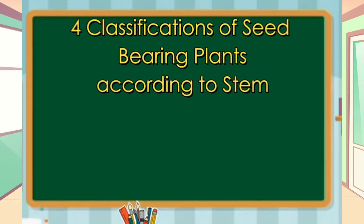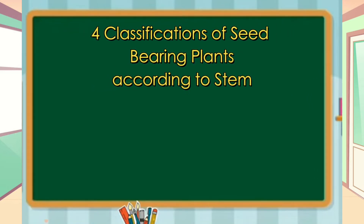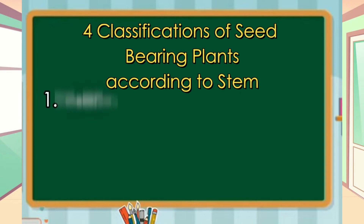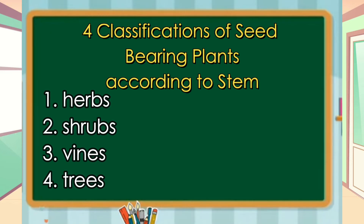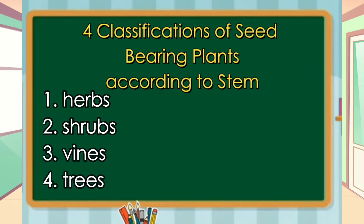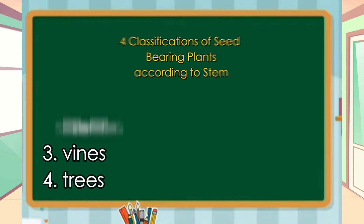So, there are four classifications of seed-bearing plants according to stem. These are herbs, shrubs, vines, and trees. Herbs have green soft stems. Shrubs have thin stems but they are usually woody and sturdier than herbs. Vines can have green soft or thick woody stems. And trees are the biggest of the seed-bearing plants.